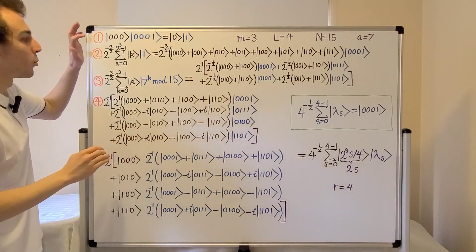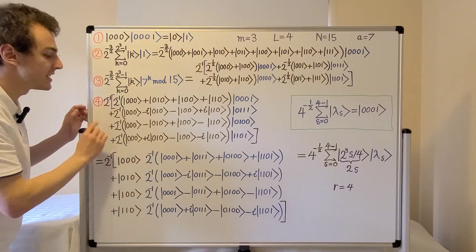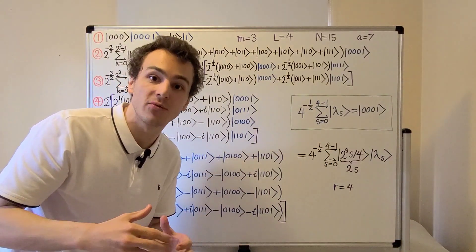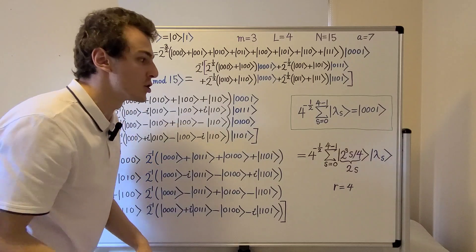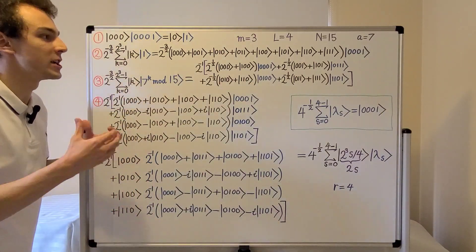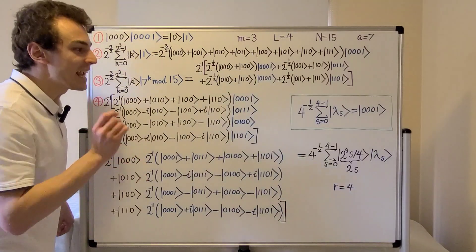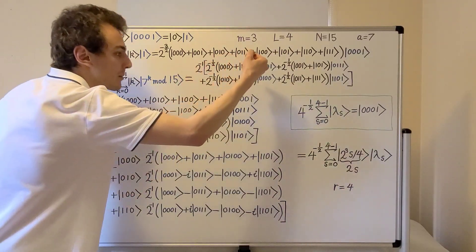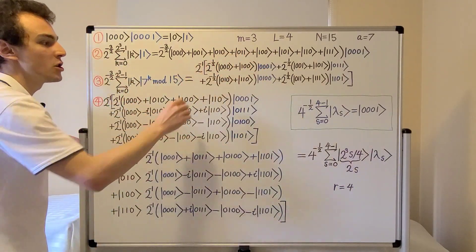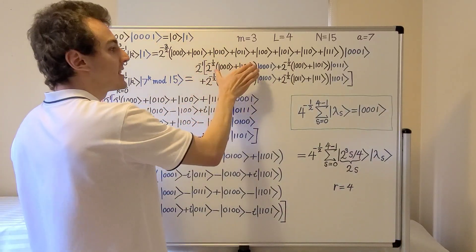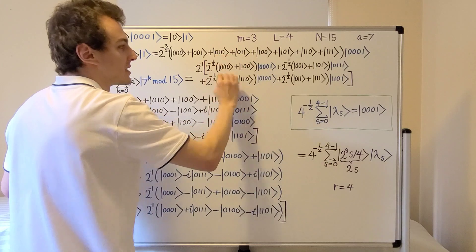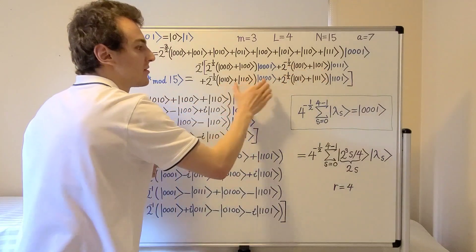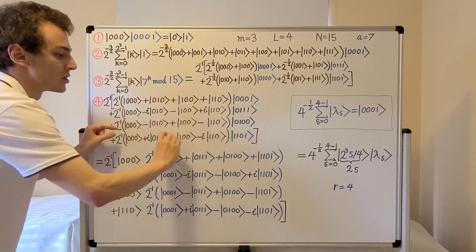Now let's move to step four. We're going to perform the inverse quantum Fourier transform on the first register — specifically a 3-qubit inverse quantum Fourier transform. By convention we call this the inverse because we're going from step 3 to step 4. Each pair of states gets mapped to a superposition of four states, and each of the four pairs maps to its corresponding superposition.